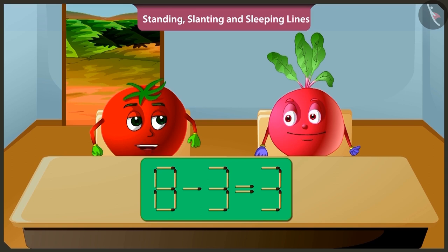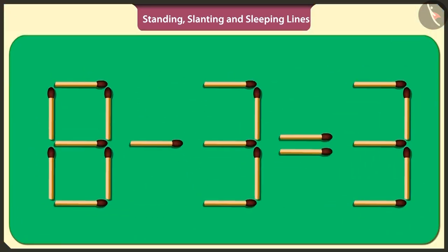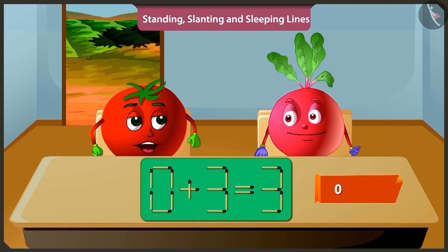You have to remove any one matchstick and place it again in such a way that it solves the puzzle. Okay. If I lift this sleeping stick in the middle of number eight and place it above the symbol of subtraction like this, then the puzzle will be solved. Yes. Adding three to a zero will make three only. Well done.